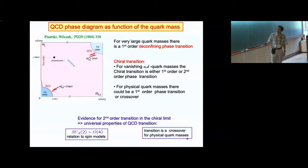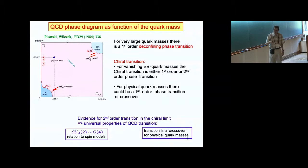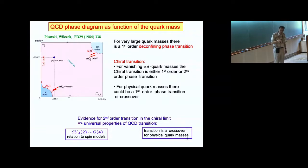More importantly, if you go to the physical point, you are away from the second-order phase transition region and are in the crossover region — which is again something established by lattice QCD. I will show more details later in the lectures.